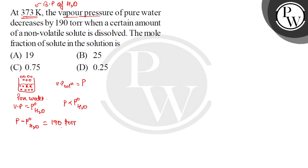Now P minus P⁰, this is called lowering of vapor pressure. And when you divide this by P⁰H₂O, this is relative lowering of vapor pressure, which is a colligative property.